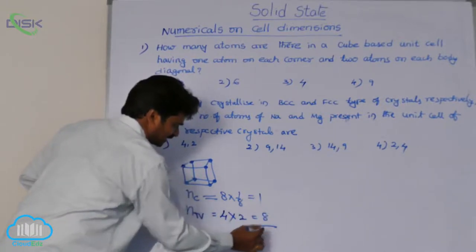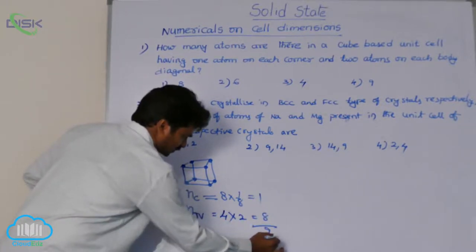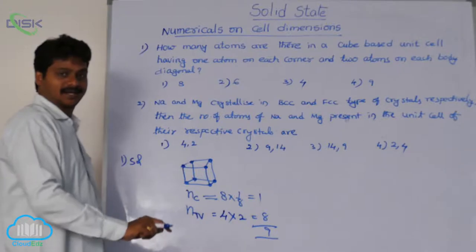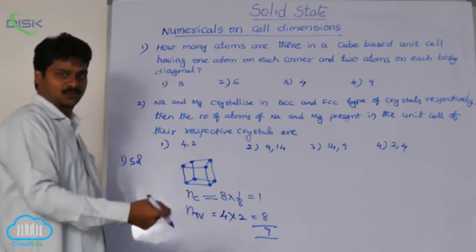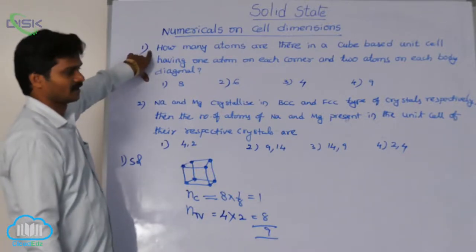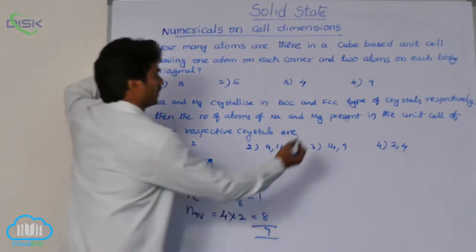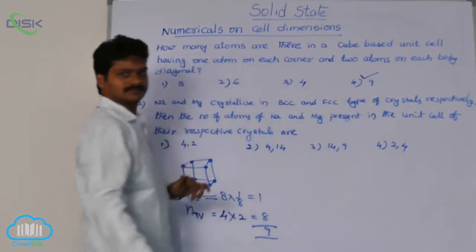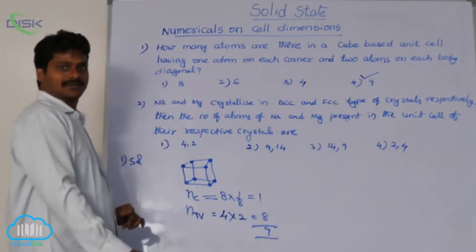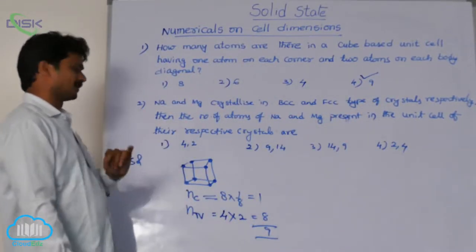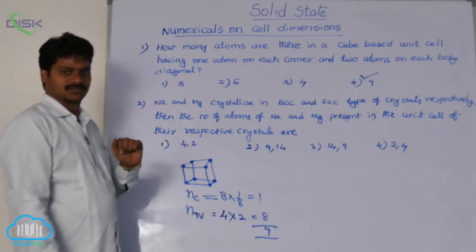So, 1 + 8 = 9. Total complete atoms, or total effective atoms for the given question, are 9. This is the solution for the first question.